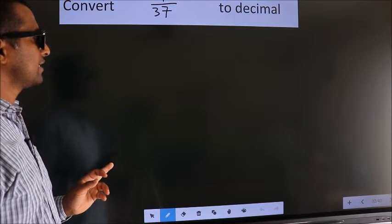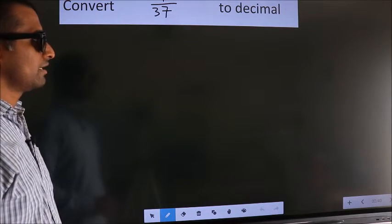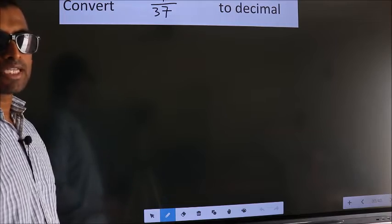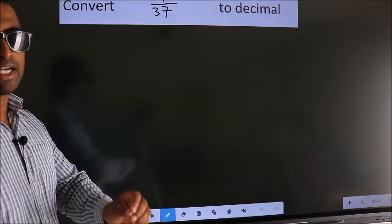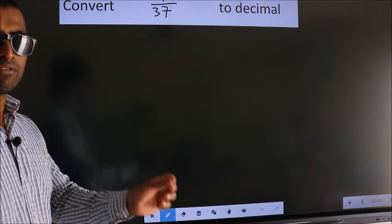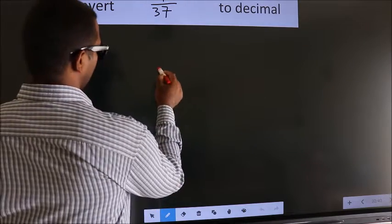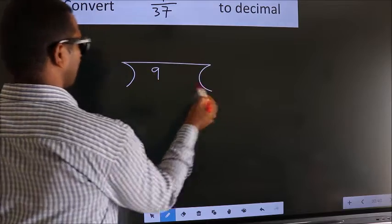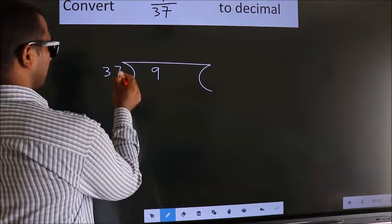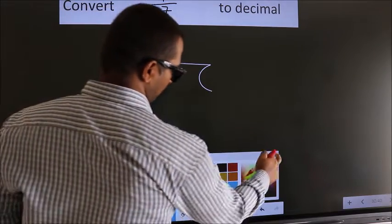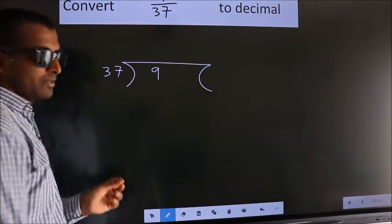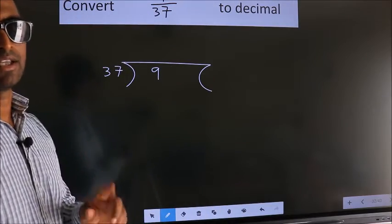Convert 9 by 37 to decimal. To convert this to decimal, we have to divide, and to divide we should frame it in this way. 9 here, 37 here. This is your step 1.